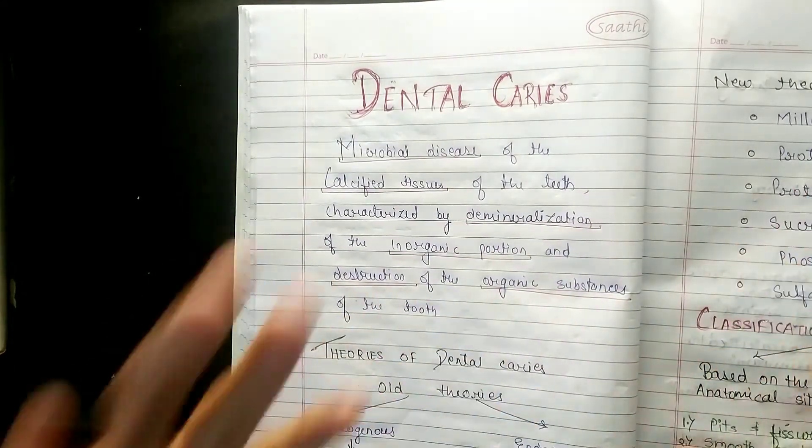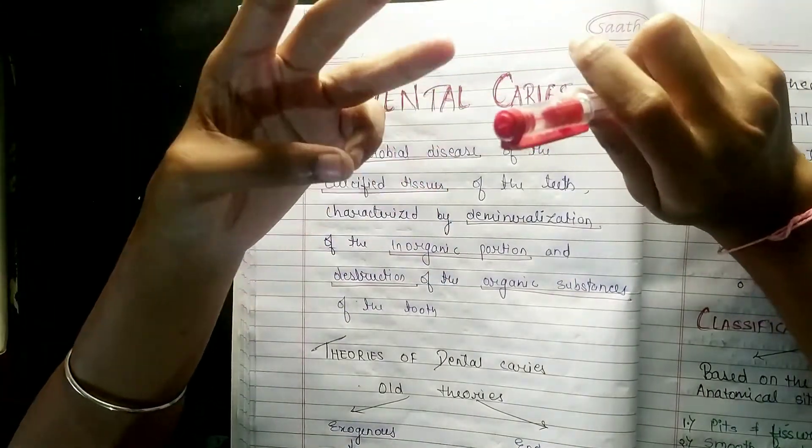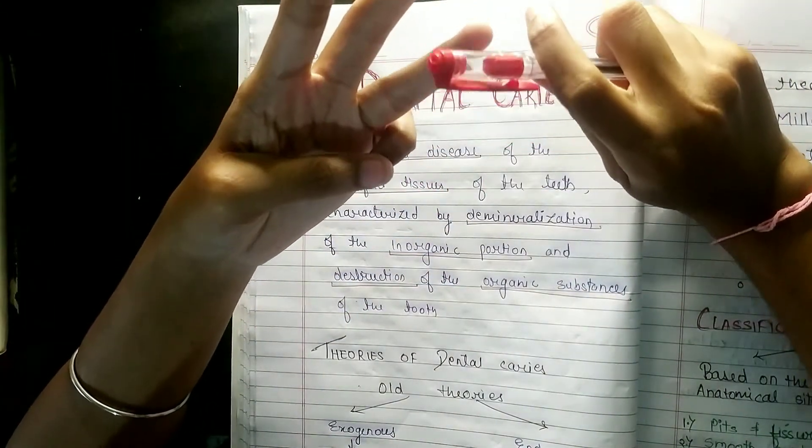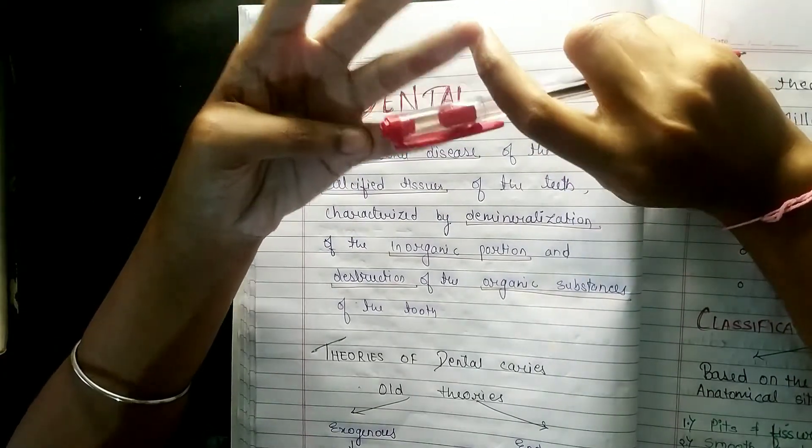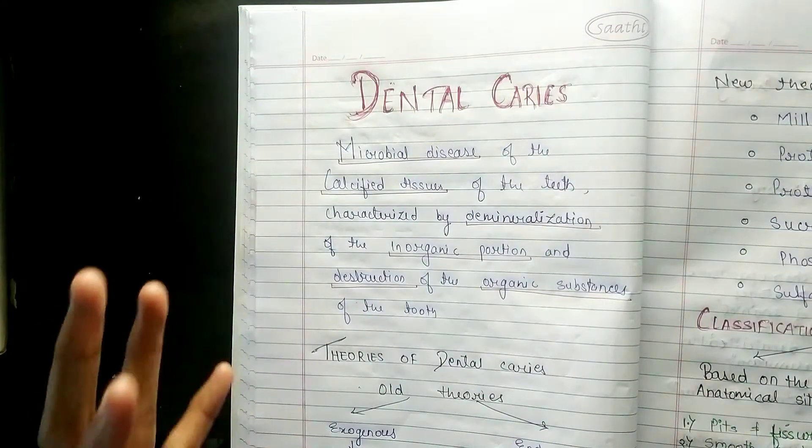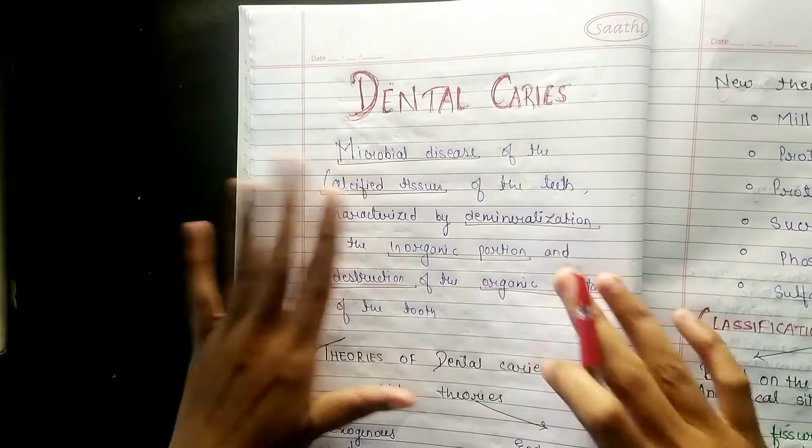So what will be the proper definition? It is a microbial disease of the calcified tissues of the teeth, characterized by demineralization of the inorganic portion and destruction of the organic substances. So you have six words here, or you can say four words you can remember very well: microbial disease, calcified tissues, demineralization of inorganic portion, destruction of organic substances of the tooth.